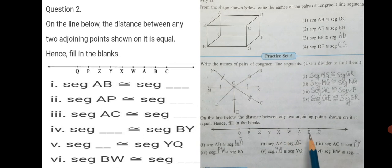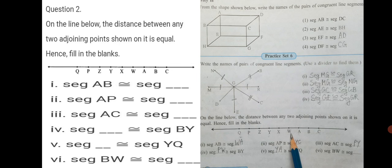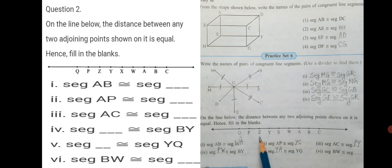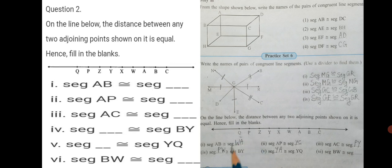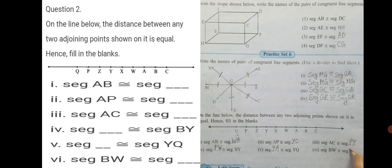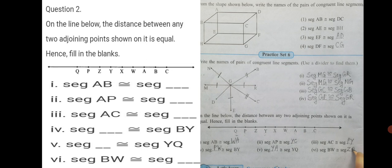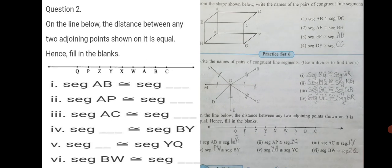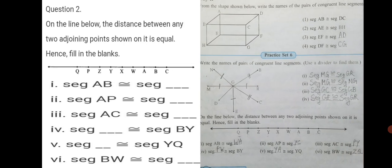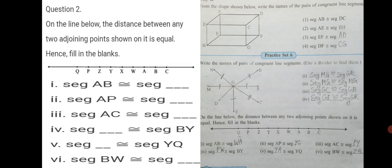Now, BW. B to W is 3 points. 1, 2, 3. Where do we start from? Choose any point. Say Z. And we count towards the left. 1, 2, 3. So, ZQ. I will write seg BW is congruent to seg ZQ. This way we have completed our question number 2 and also our practice set 6.